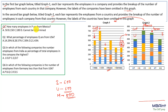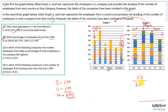Question 1: How many employees in P are from Mexico? Looking at Mexico in company P, the value is 100. Question 2: What percentage of employees in Q are from USA? USA's value in Q is 50. Total employees in Q: 50 + 150 = 200 + 100 = 300 + 50 = 350. So the percentage is 50/350 = 1/7 = approximately 14.28 percent.